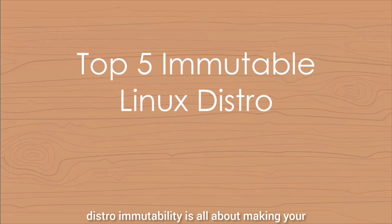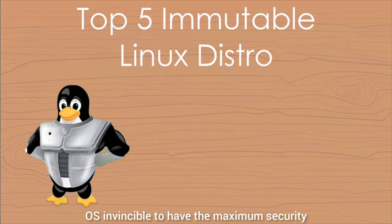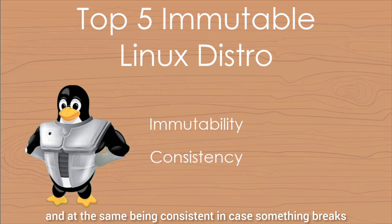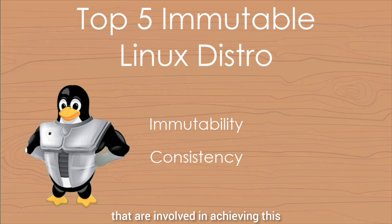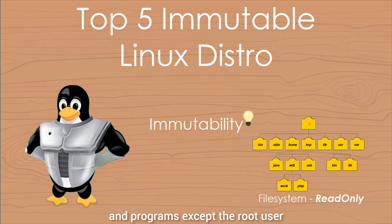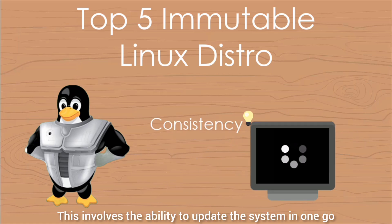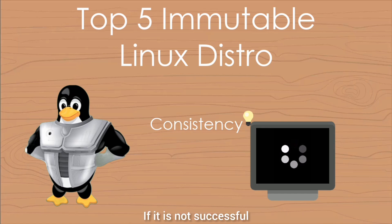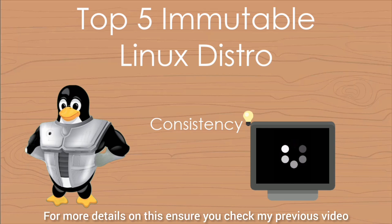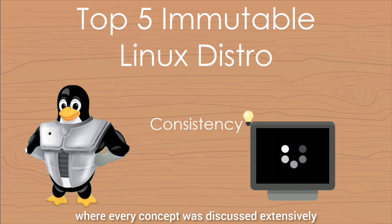As discussed in the last video, distro immutability is all about making your OS invincible to have the maximum security and reliability possible, while being consistent in case something breaks. Let's summarize the concepts involved. First, immutability — a system that is read-only for other users and programs except the root user. Second, consistency — the ability to update the system in one go. It is checked at the end; if not successful, a rollback occurs without any consequence, ensuring you have a working system at all times. For more details, check my previous video where every concept was discussed extensively.